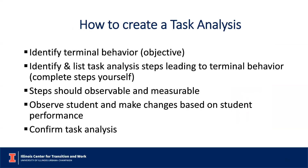How do we create a task analysis? The very first thing we need to do is identify the terminal behavior, which is the objective. For example, the objective might be for a student to wash their hands 10 out of 10 times correctly according to the steps of a task analysis. To figure that out, we would first complete the task ourselves — wash our own hands and write down the steps needed. Each of these steps should be observable and measurable, meaning we must be able to take data on each step, and anyone observing could take data in the same way.